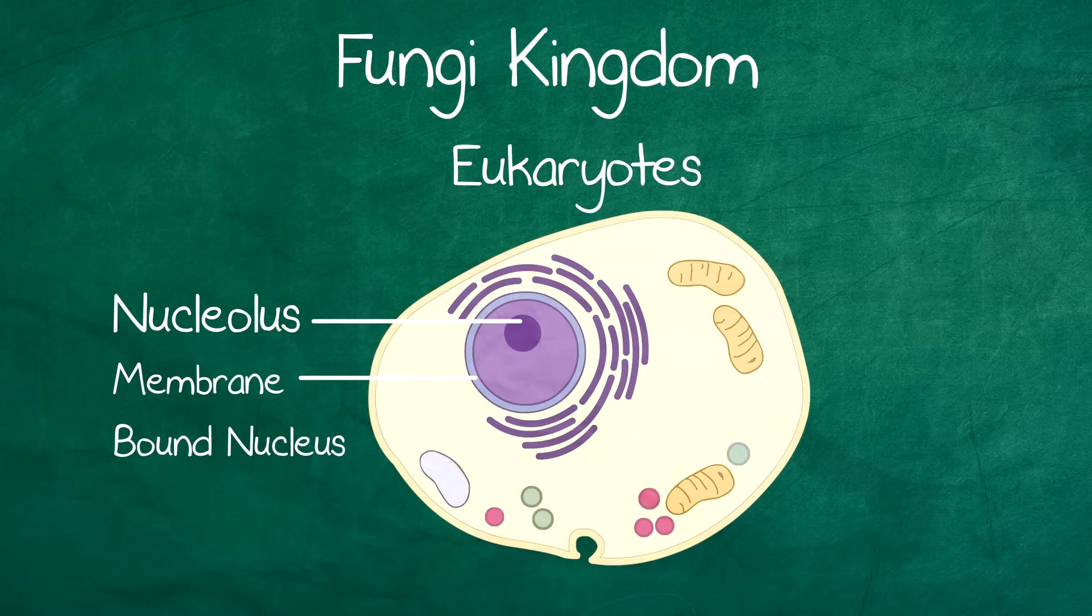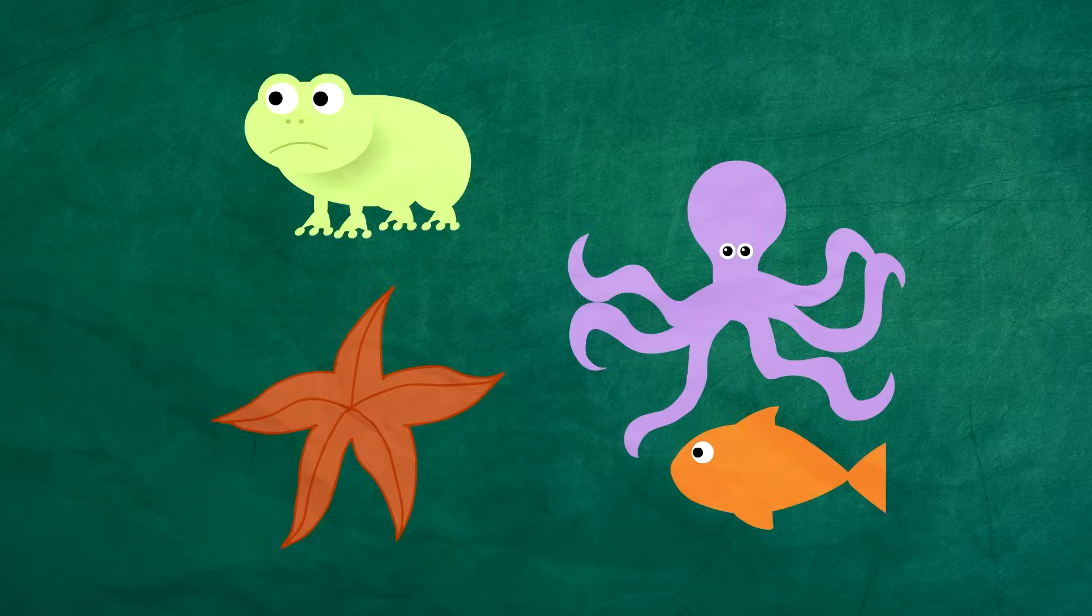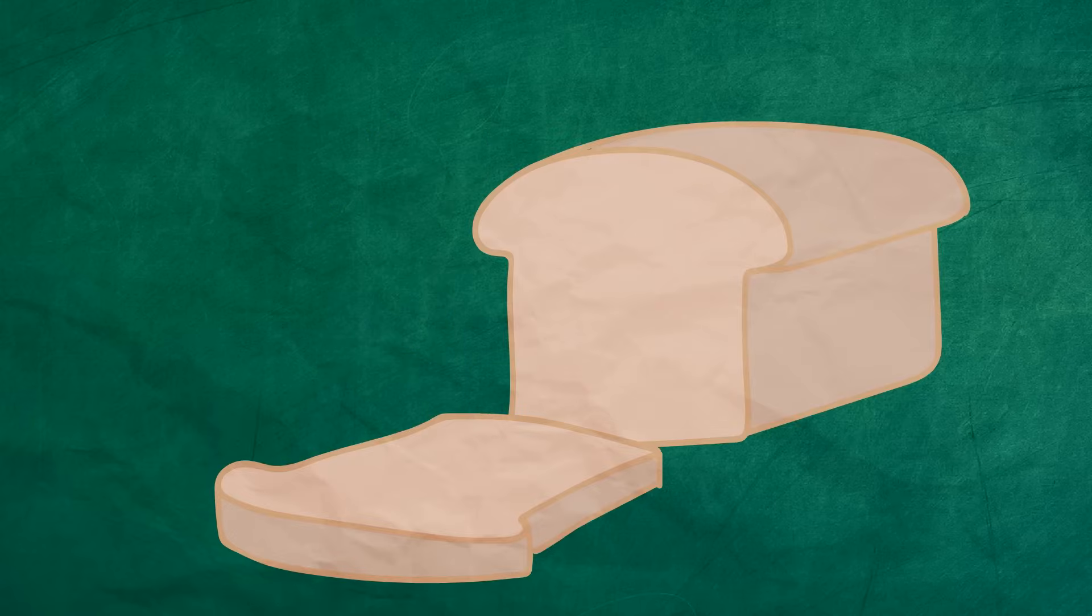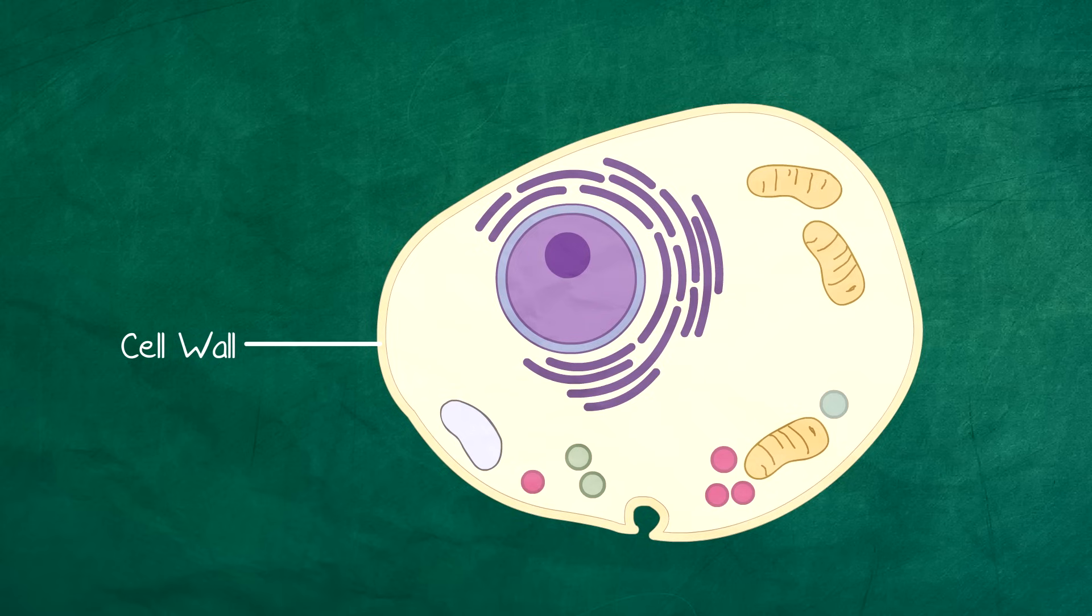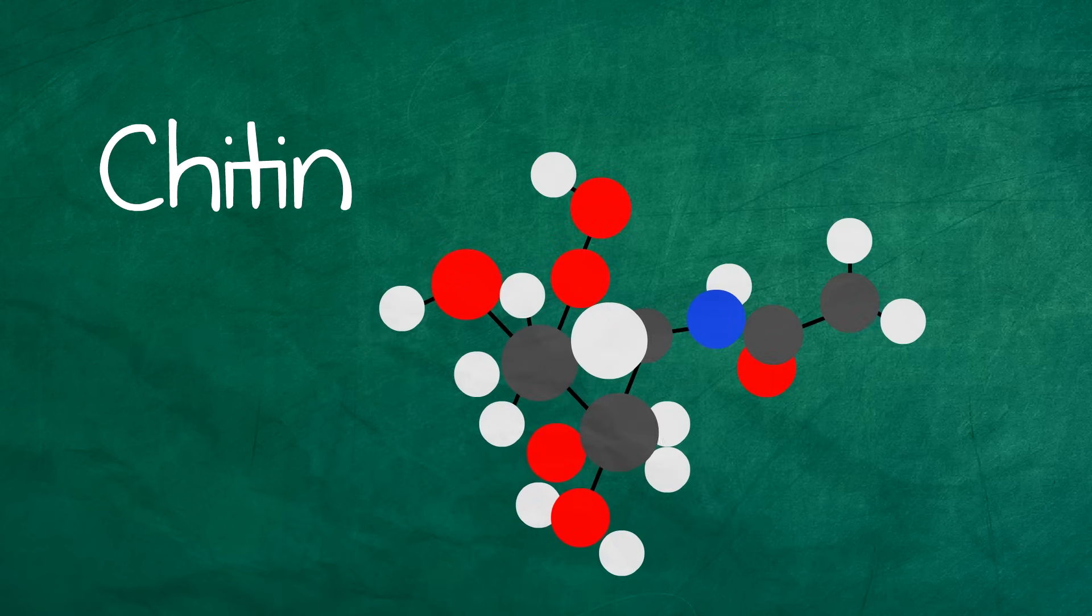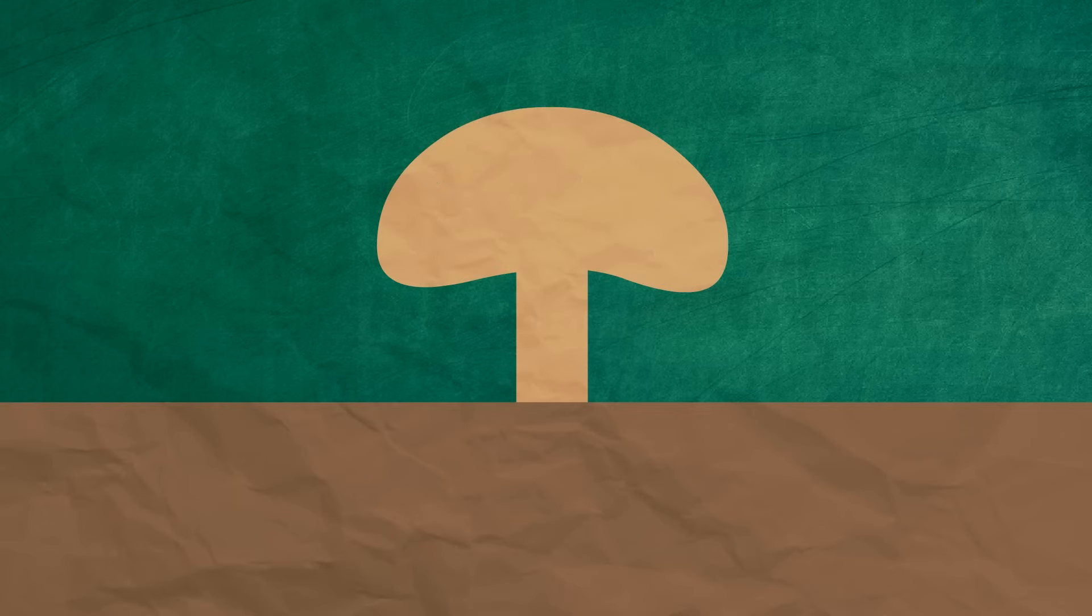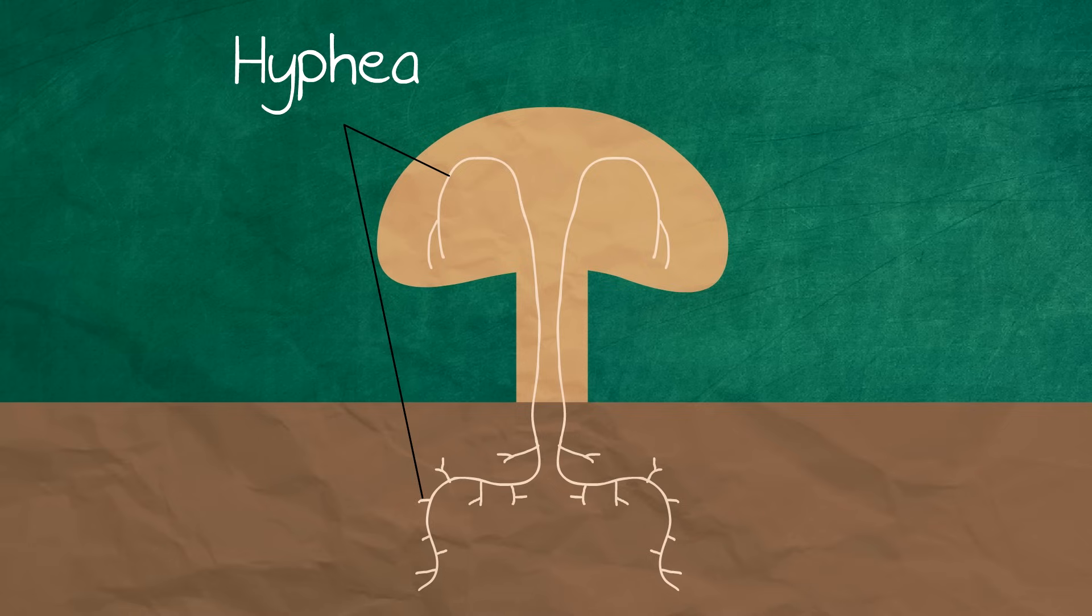The Fungi kingdom are eukaryotes and can be multicellular like animals and plants, but could also be unicellular such as yeast. They have cell walls like plants but have a substance called chitin rather than cellulose. They are heterotrophic and saprotrophic, meaning they decompose, so they break things down, or are parasitic. The body of a fungus is composed of a thin filament called hypha. They secrete enzymes, do external digestion, and then absorb the resulting nutrients.